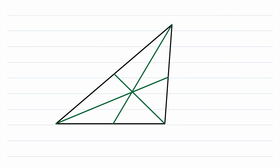Let's begin by noticing some congruencies. Remember that a median is a line segment from a vertex to the midpoint of the opposite side. So by definition, this line segment here is congruent to this line segment here — I'll mark that with single lines. Similarly, by definition of median, this line segment here is congruent to this line segment here, marked with two lines. And then this segment here is congruent to this segment here, marked with three lines. So we've got a few pairs of congruent sides — that seems like some decent progress.